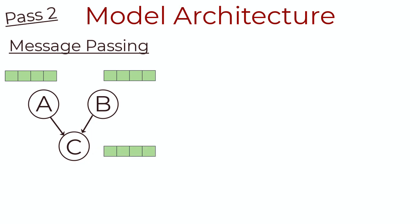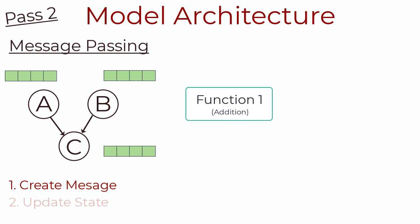The two sub-steps here are first, create the message, and then update the state of node C. Creating the message for node C involves taking the inbound nodes to C and applying some operation on the vectors. It could be something as simple as a summation operation. So essentially, we'd just be summing the vectors A and B.